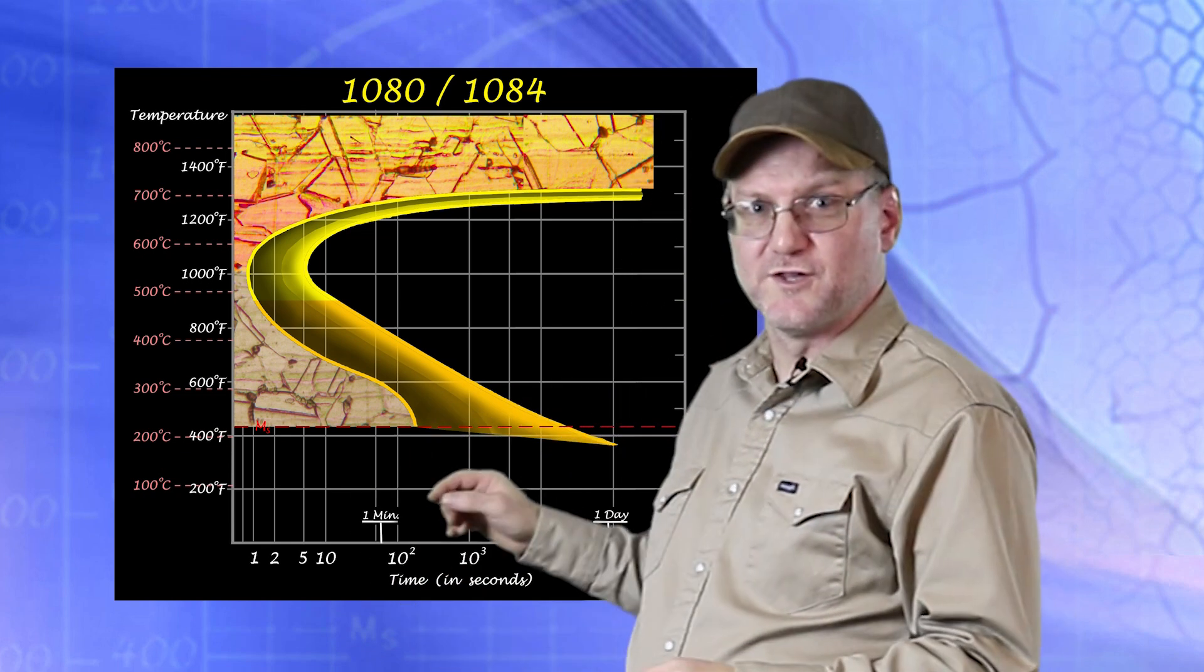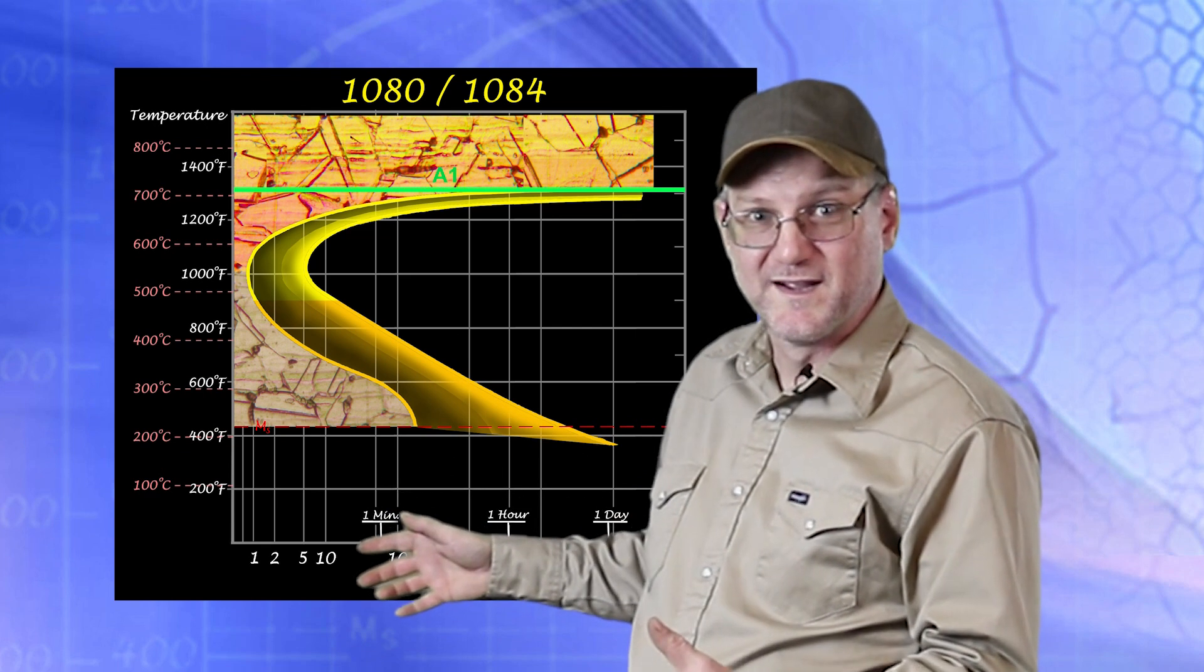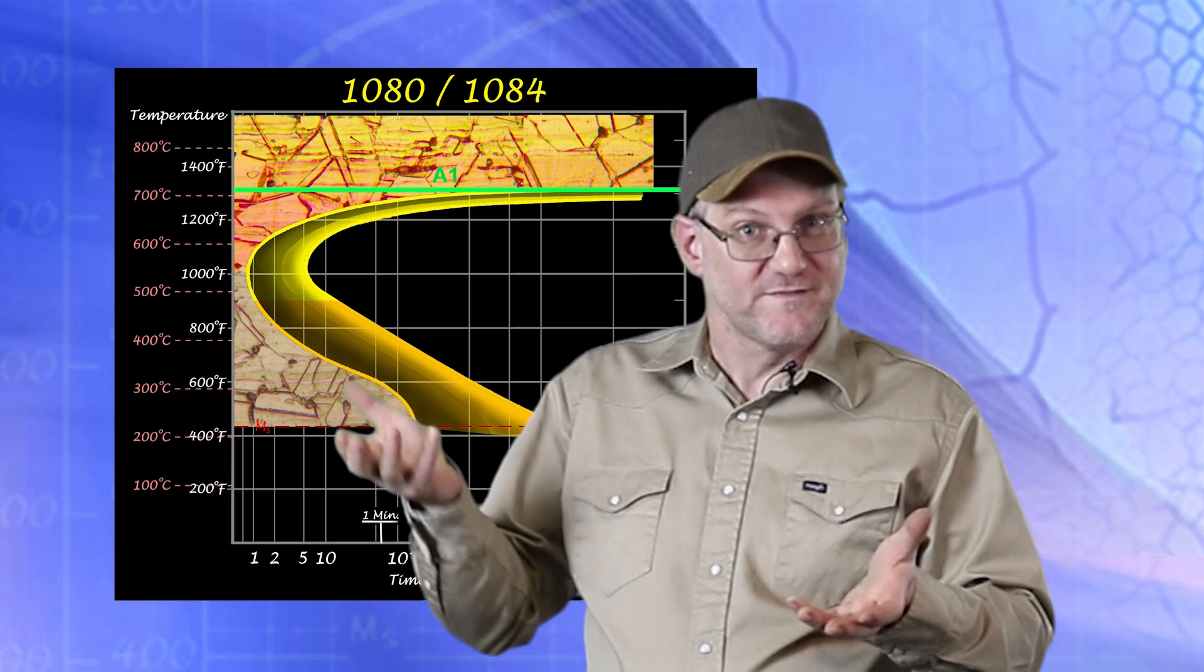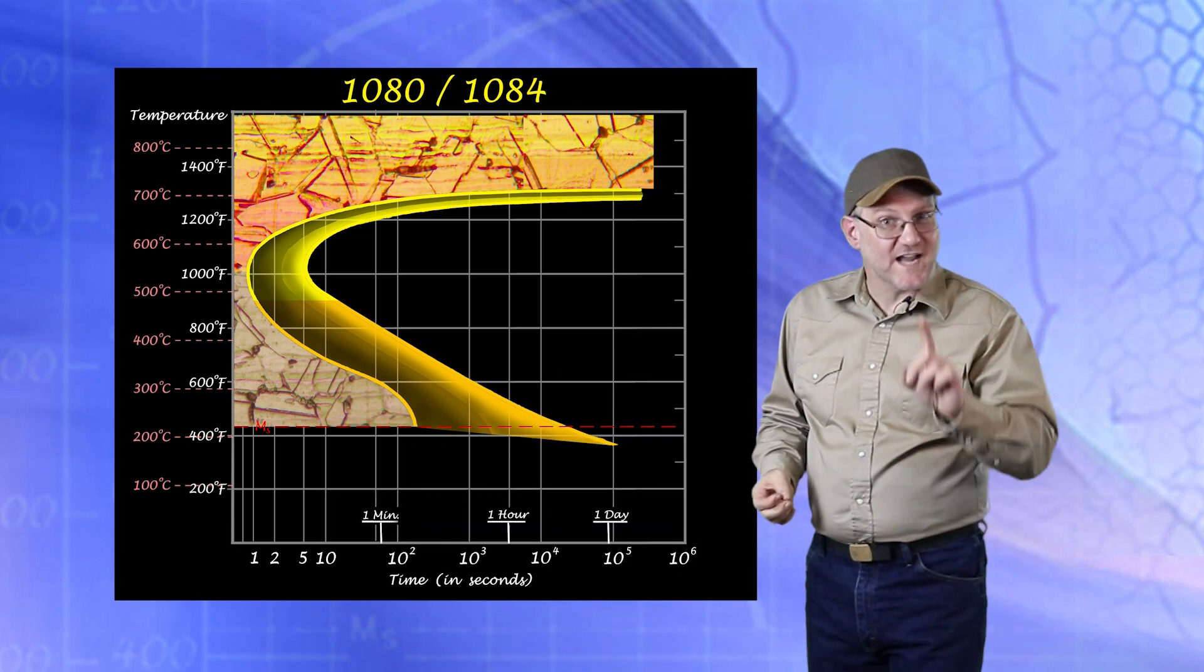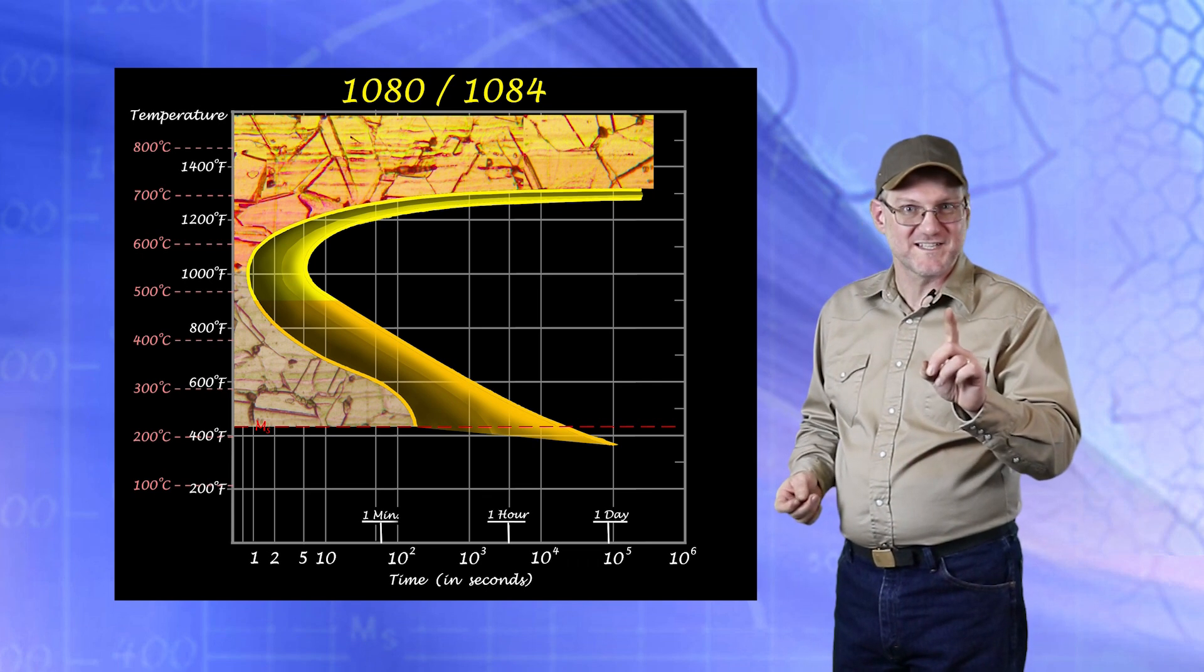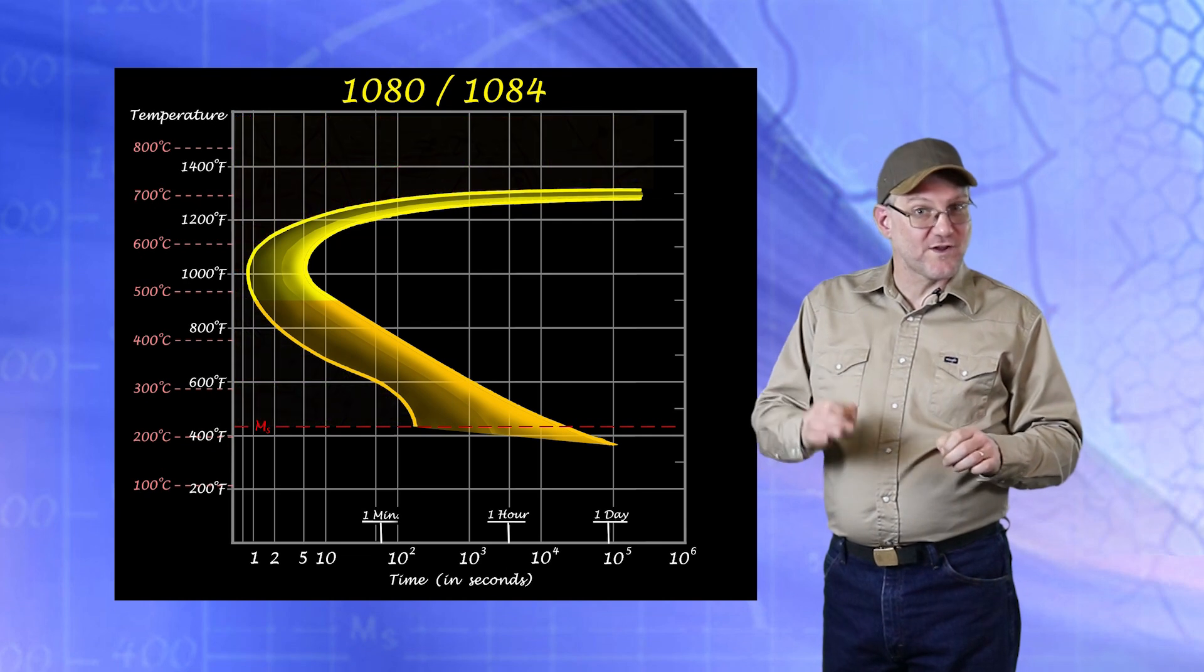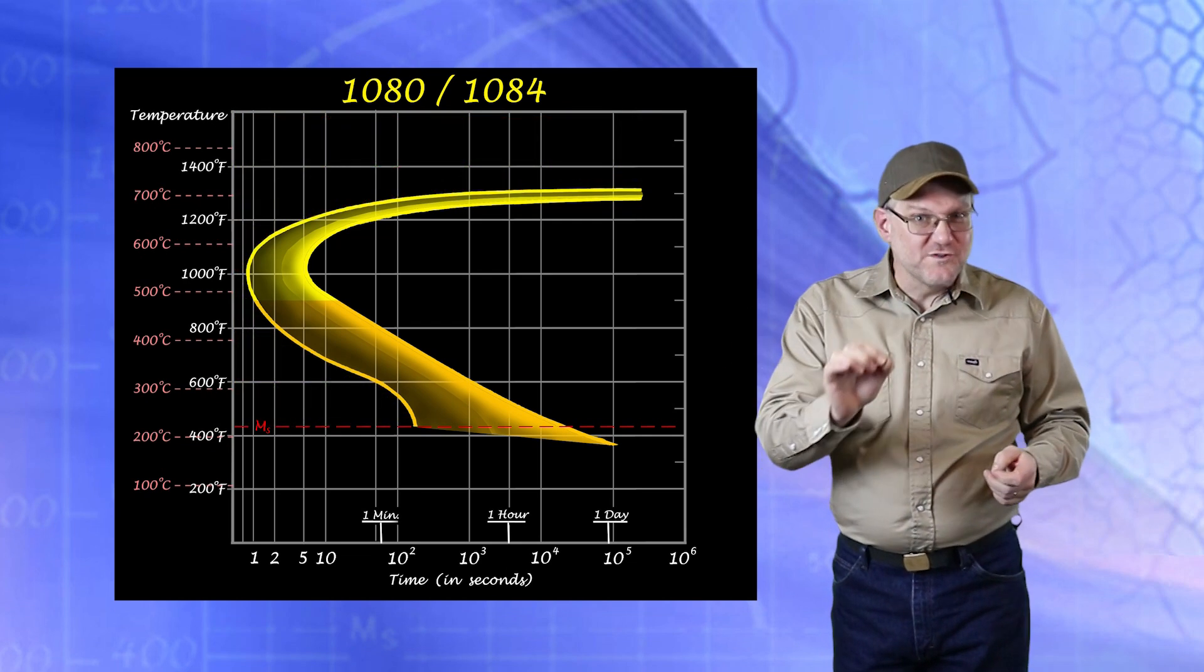After all, isn't austenite only supposed to occur above that temperature? Well, if you are thinking that, then good catch, because that is actually the key to hardening steel. Remember that all of these changes are the result of diffusion—there's that word again—and that diffusion takes time.